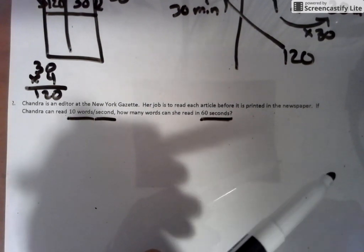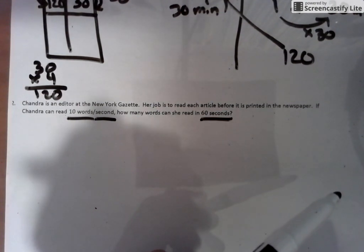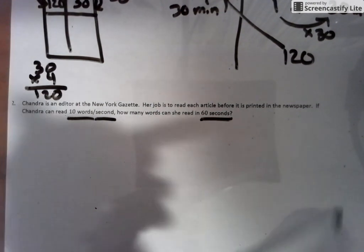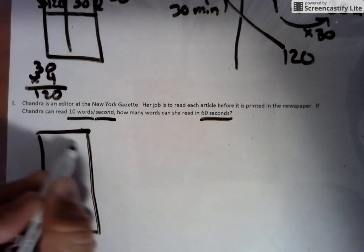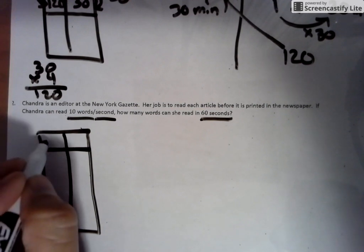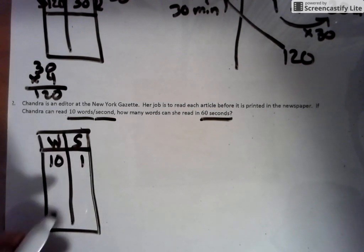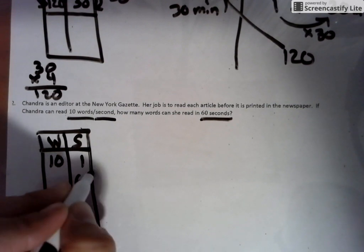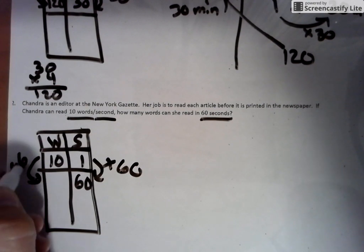If Chandra can read 10 words per second, how many words can she read in 60 seconds? So what we're initially trying to do here is eventually we're getting into the world of what we call a proportion. And above what we just did, the note you just took, the part that wasn't the chart, that's the beginning steps of a proportion. But instead of doing diagonal multiplication, we are doing horizontal multiplication, which is kind of a neat thing.